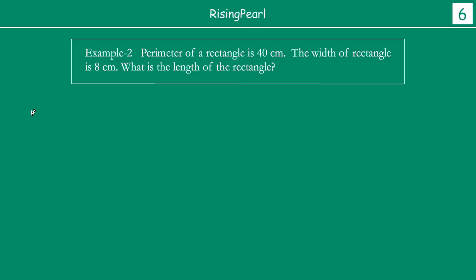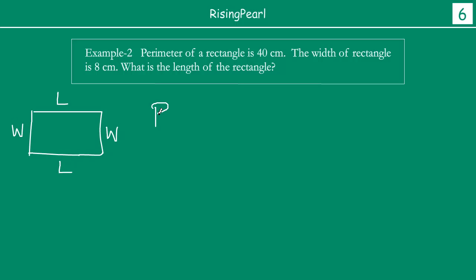Now, perimeter — you know that if you draw a rectangle, this is your length and this is your width. You know that perimeter is equal to twice the length plus twice the width. This is something that we already know about what a perimeter is.